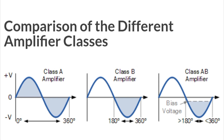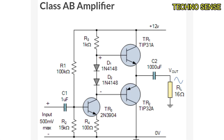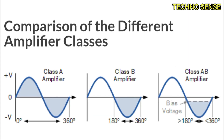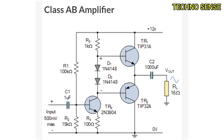Class AB is a compromise of Class A and Class B amplifiers. It is basically a Class B amplifier with diodes added to bias the push-pull transistors, making them conduct a little on the other half so that distortion is reduced. The conduction angle is above 180 degrees. This is the most common amplifier — more efficient than Class A and with less distortion than Class B. An amplifier with 80 percent efficiency can be constructed with a Class AB topology.